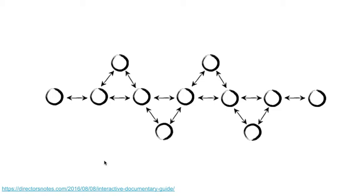Interactive stories can take a number of different structures — they can have branches, different endings, a lot of choices or very few — and this introduces a number of different dynamics into the production process. One of these is simply cost and time: the more choices you introduce into a story, the more time and effort it's going to take to create the material to tell the story of those different branches.